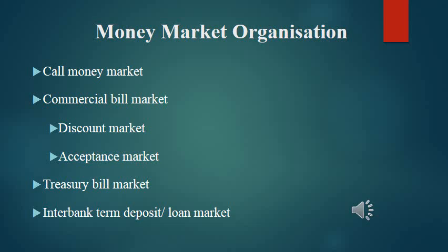Now let us discuss money market organization. The money market is not a homogeneous market; it is a heterogeneous market consisting of many sub-markets. The present structure of the money market in terms of main instruments includes: call money markets, loan markets, commercial bill markets, acceptance markets, treasury bill markets, commercial paper, certificates of deposits, and others.